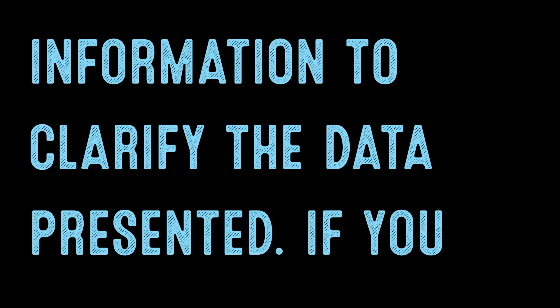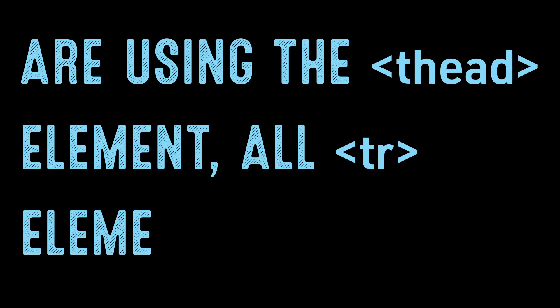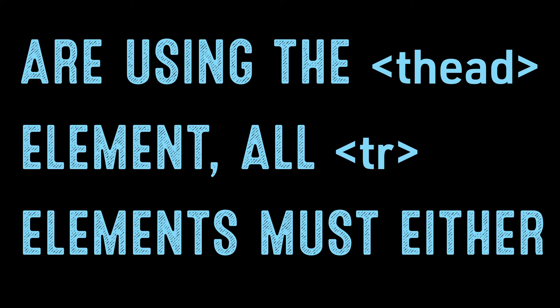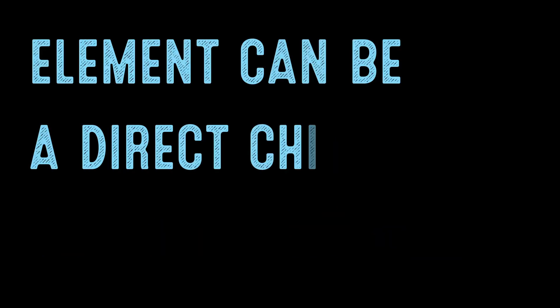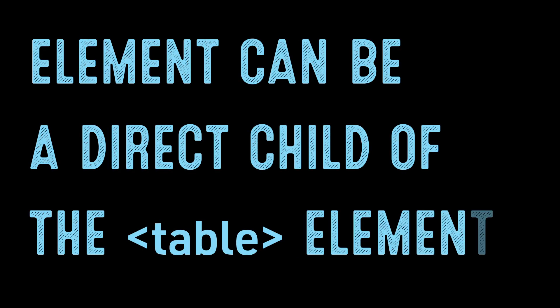If you are using the table head element, all table row elements must either be part of the table head, table body, or table foot. No table row element can be a direct child of the table element.